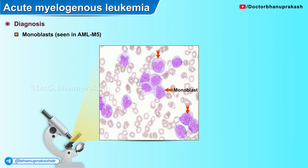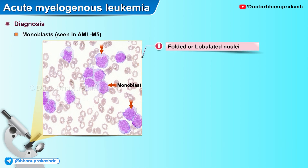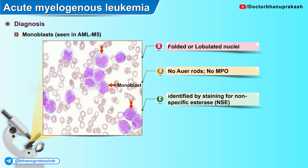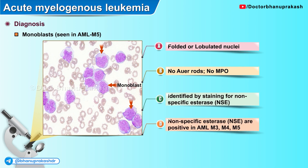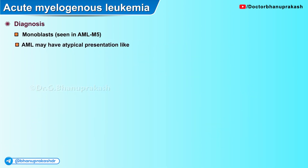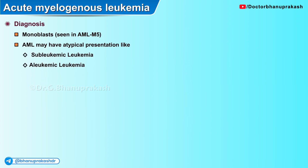Monoblasts have folded or lobulated nuclei, do not have Auer rods, and are not myeloperoxidase positive. They are identified by staining for non-specific esterases, which are positive in the variants M3, M4, and M5 of AML. Acute myelogenous leukemia may also have atypical presentations like sub-leukemic leukemia or aleukemic leukemia.